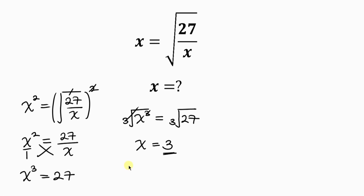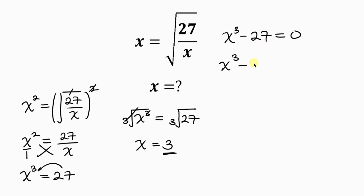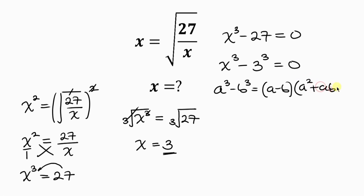In order to get those other two solutions of x, we apply the algebraic method. Knowing that x cubed is a perfect cube and 27 is also a perfect cube, the other set of students will move 27 to the left hand side so that we have x cubed minus 27, which can be written as x cubed minus 3 cubed, equal to 0. Notice that we have a difference of two cubes on the left hand side. The property for difference of two cubes is: a cubed minus b cubed equals a minus b, times a squared plus ab plus b squared.